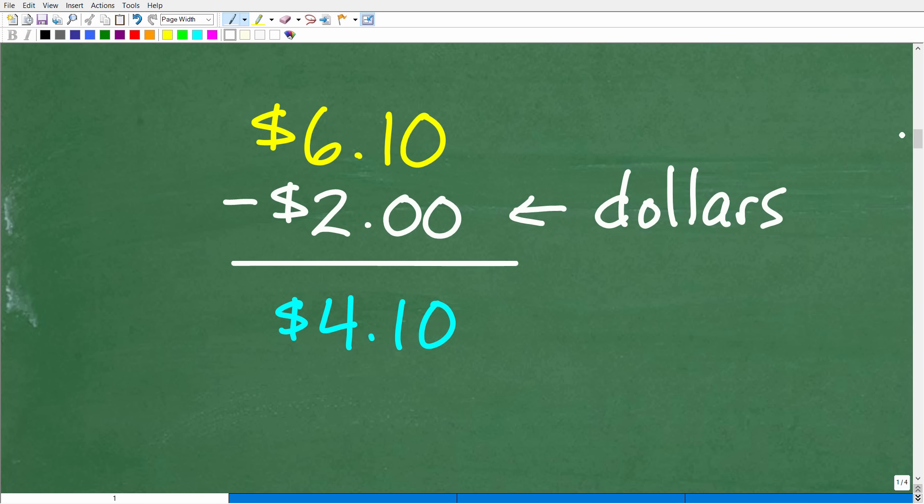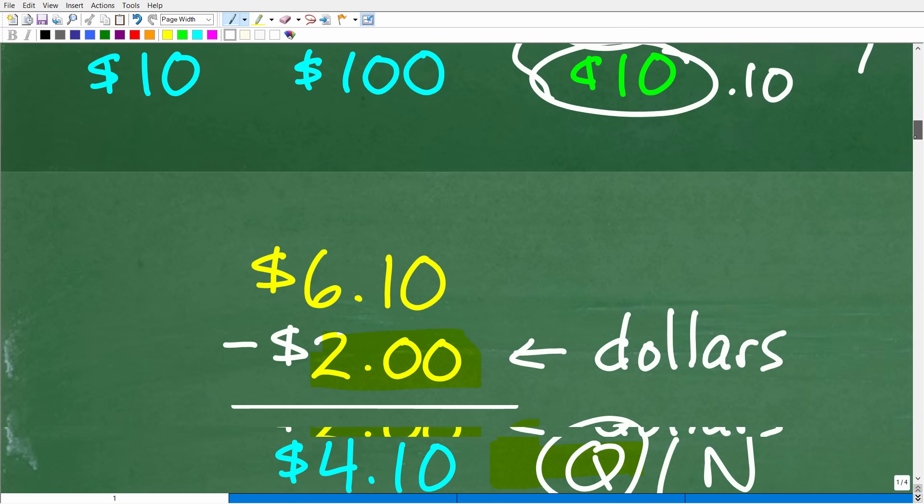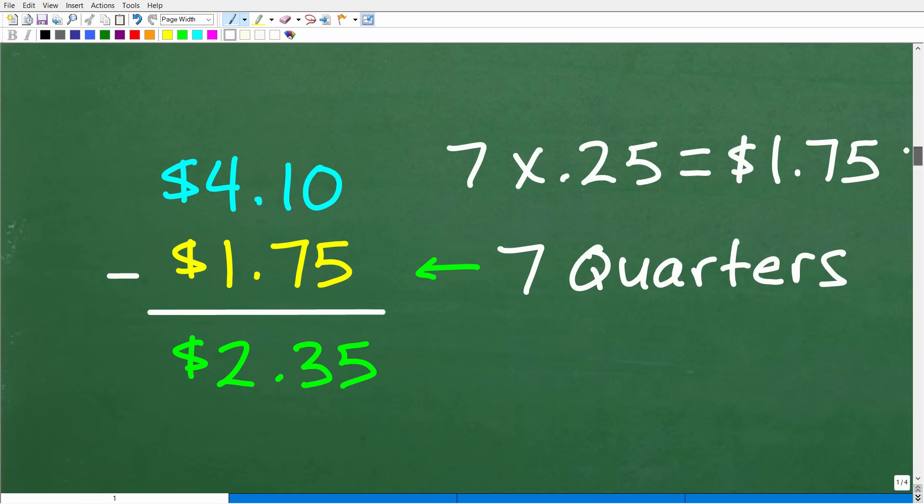Okay, so Ted has $6.10 total. So we know that he has $2. So we can just simply subtract away those $2 from his $6.10. And that leaves us with $4.10. Now, right here, he doesn't have any pennies or dimes. So the only thing that this $4.10 is made up of is quarters and nickels. But we do know how many quarters Ted has. And the problem indicated that Ted has seven quarters. All right, so seven quarters. So let's take away the value of those quarters.